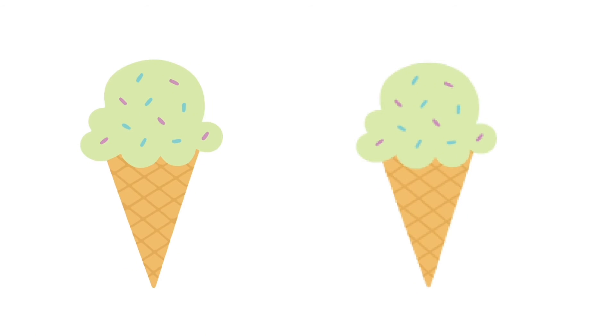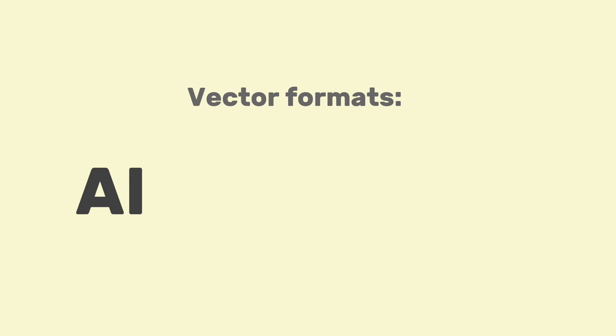It's very easy to convert a vector image into a raster — you can simply do it by saving the image in a raster format. However, if you want to turn a raster image into a vector, it's a little more complicated because you need to trace the outline and recreate the artwork. I have a couple of tutorials showing how to vectorize a raster image in Illustrator — you can find the links in the description below.